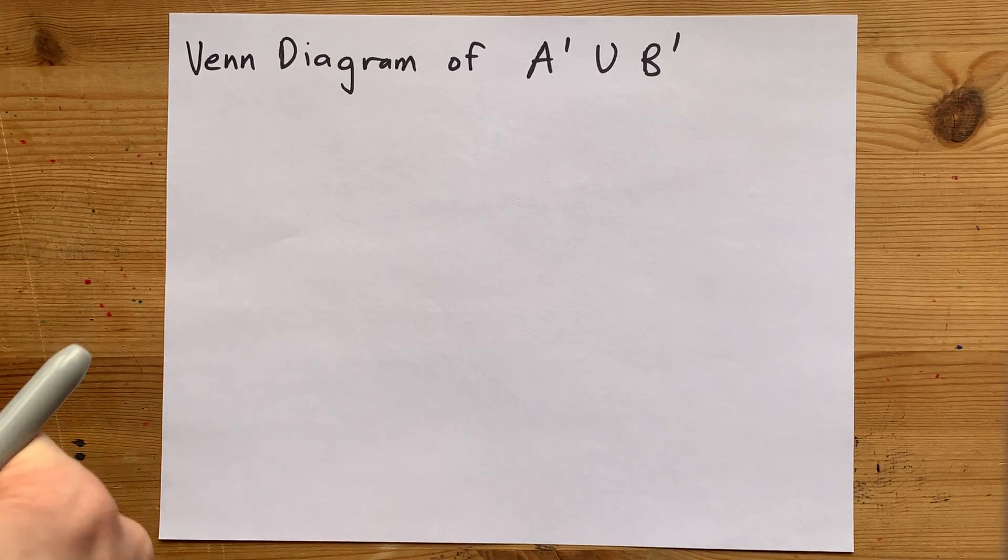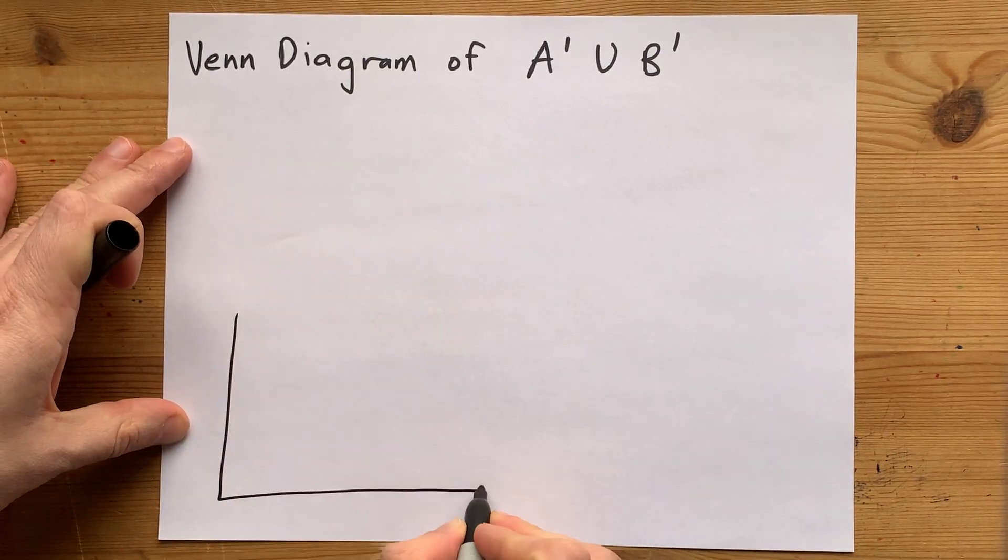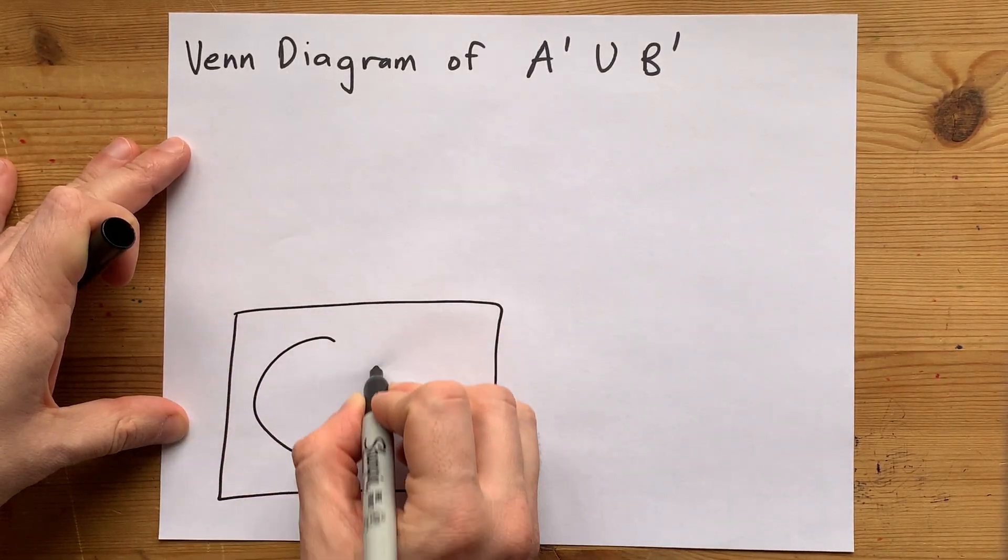Let's draw the diagram for A complement union B complement. I'm just going to quickly draw myself the two-circle Venn diagram.